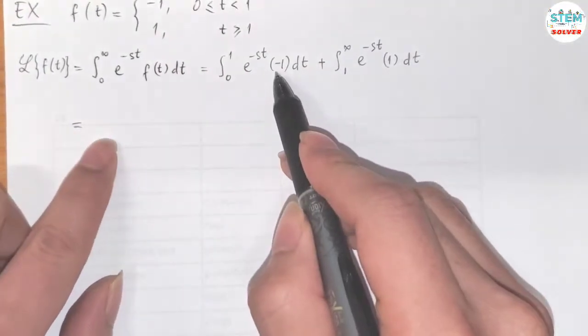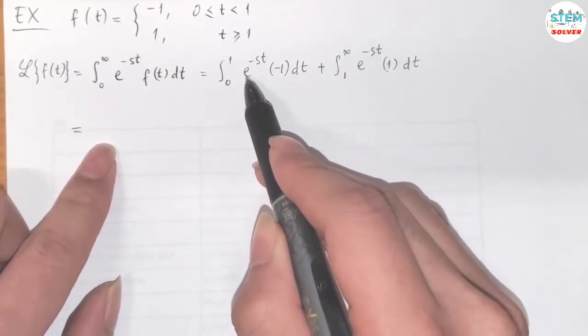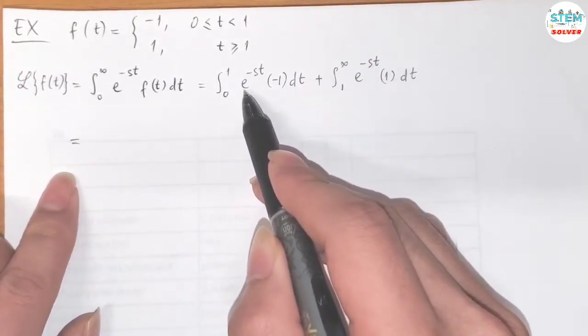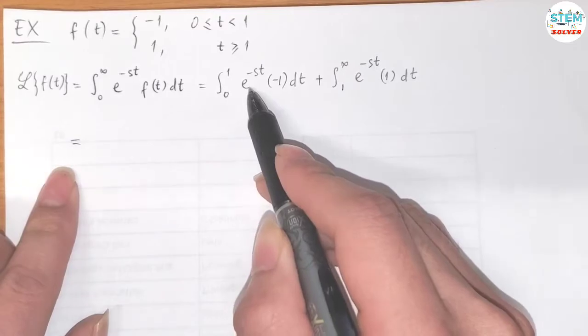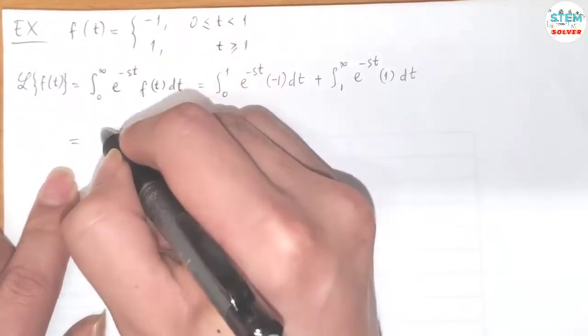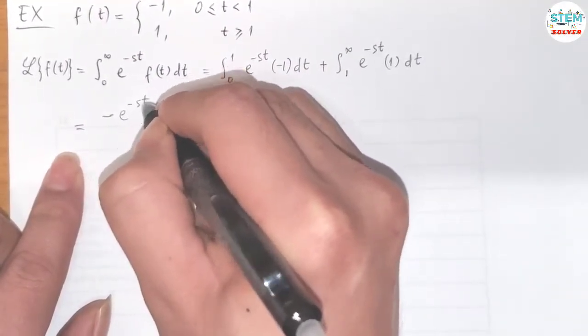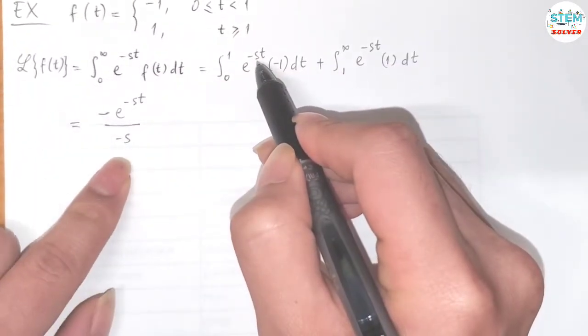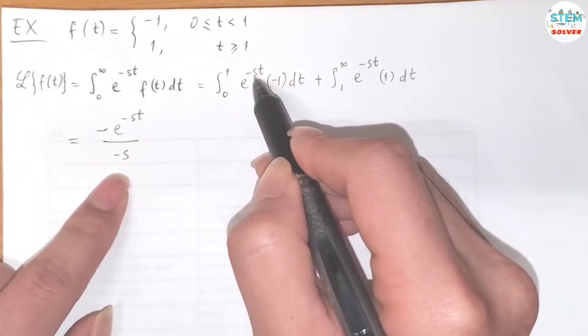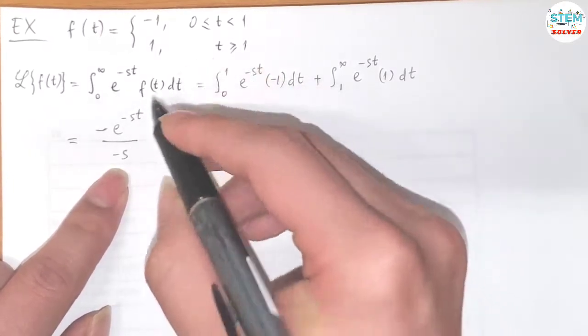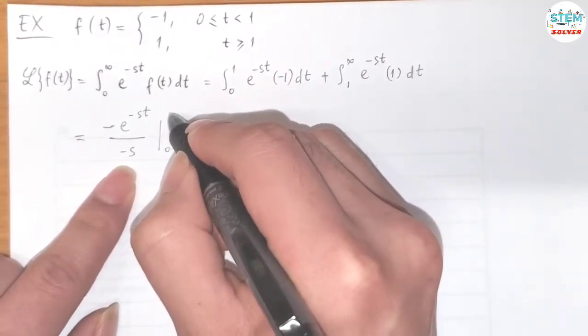So the integral of this with respect to t is e to the negative st. You have negative st here. So we have negative e to the negative st over negative s. Don't forget to divide by the constant here when you take the integral. And we integrate from 0 to 1.